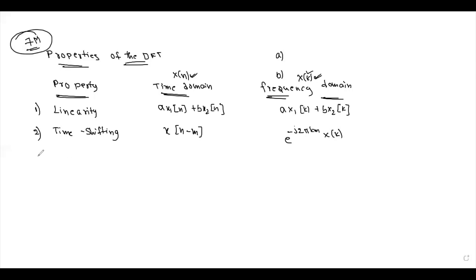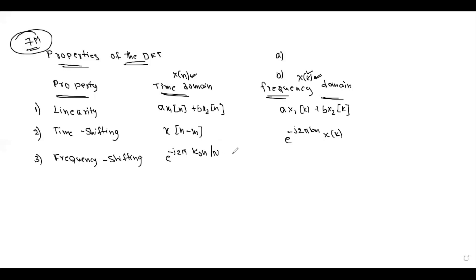The third property is the Frequency Shifting Property. In the time domain: e^(-j2πk₀n/N) · x(n). In the frequency domain: X(k - k₀). This is the frequency shifting property.